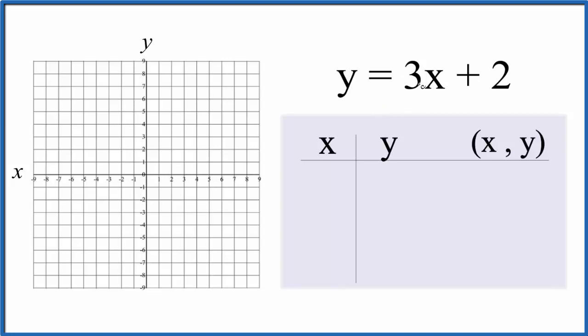So if x is 0, I like to start with 0, you can start with any number, but if we use 0 it'll probably fit on the graph. So 3 times 0 plus 2, that gives us 2. We could say x is 1. 3 times 1 is 3, plus 2, that gives us 5.